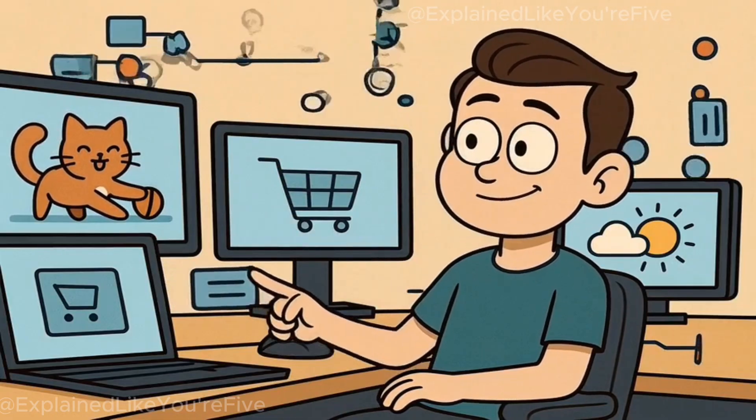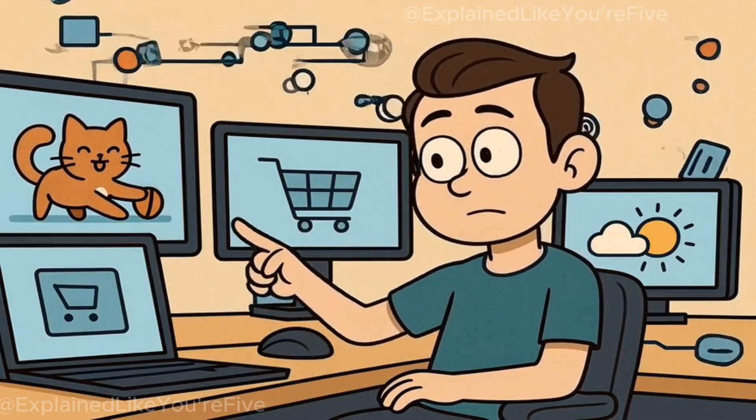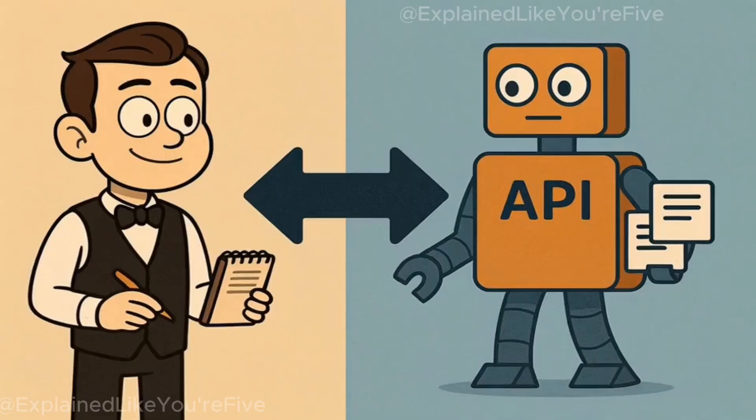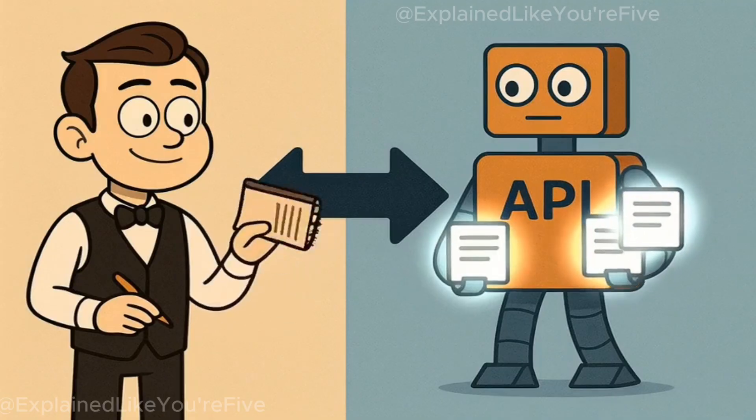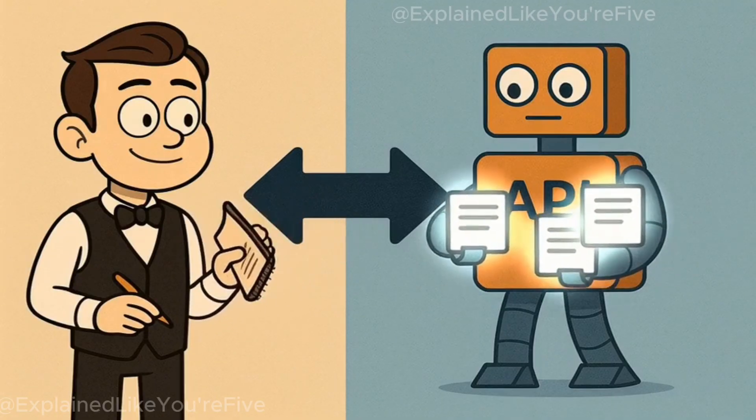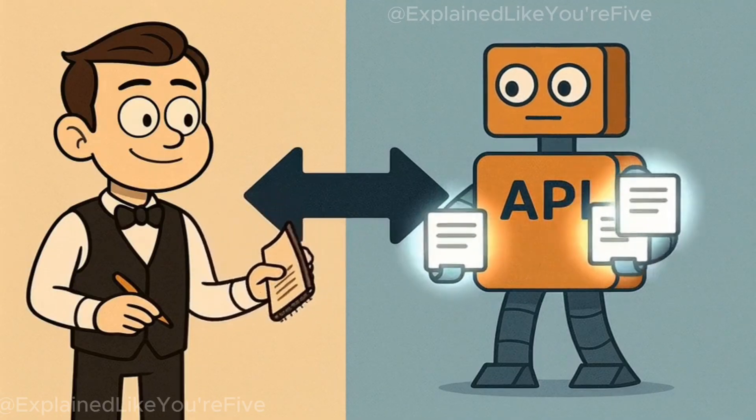Except instead of burgers, it's cat videos, shopping carts, and weather reports. And instead of waiters, we have something called APIs.